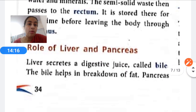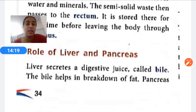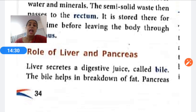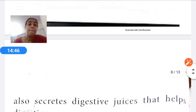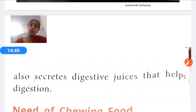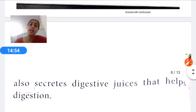The liver secretes a digestive juice called bile, which helps in the breakdown of fats, as fats are very hard to digest. The pancreas also secretes many digestive juices that help in the digestion of food.